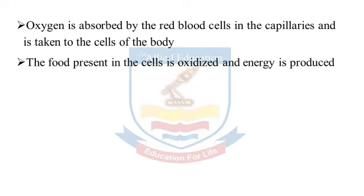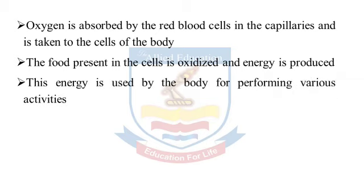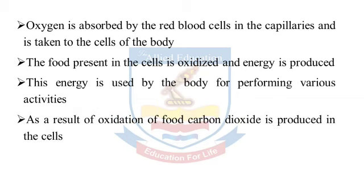The food present in the cells is oxidized and energy is produced. Cells mein maujood khoraak ki oxidation hoti hai aur is se energy paida hoti hai. This energy is used by the body for performing various activities. Is energy ko jism mukhtalif sargarmion mein istemal kar leta hai.